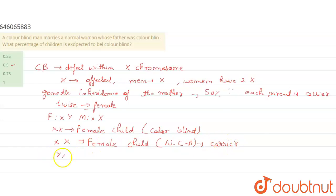So here, male child not colorblind and not a carrier. So from the given options, option B, that is 0.5, is the right choice.